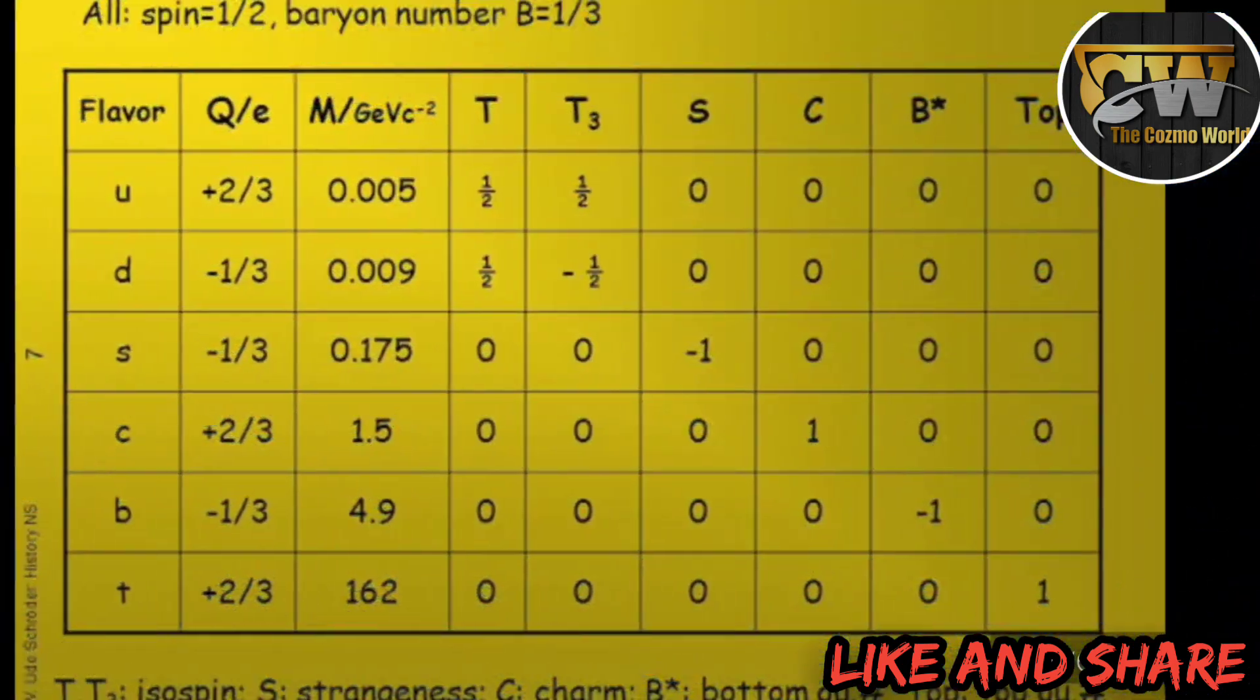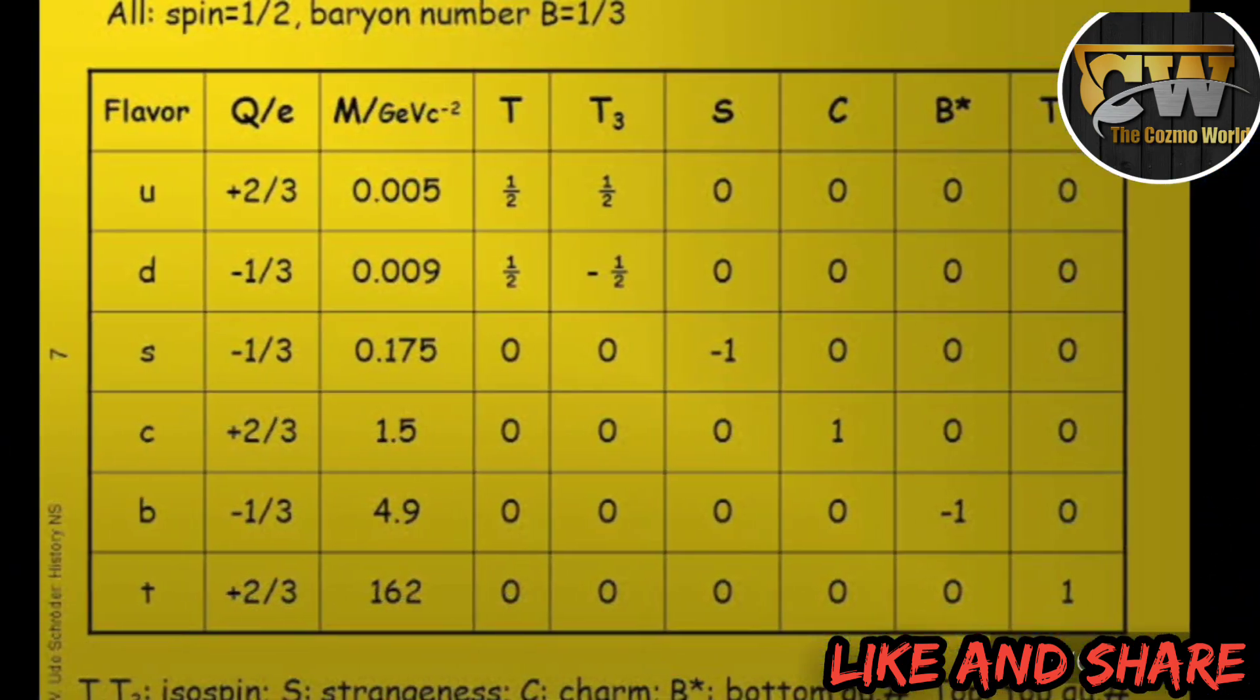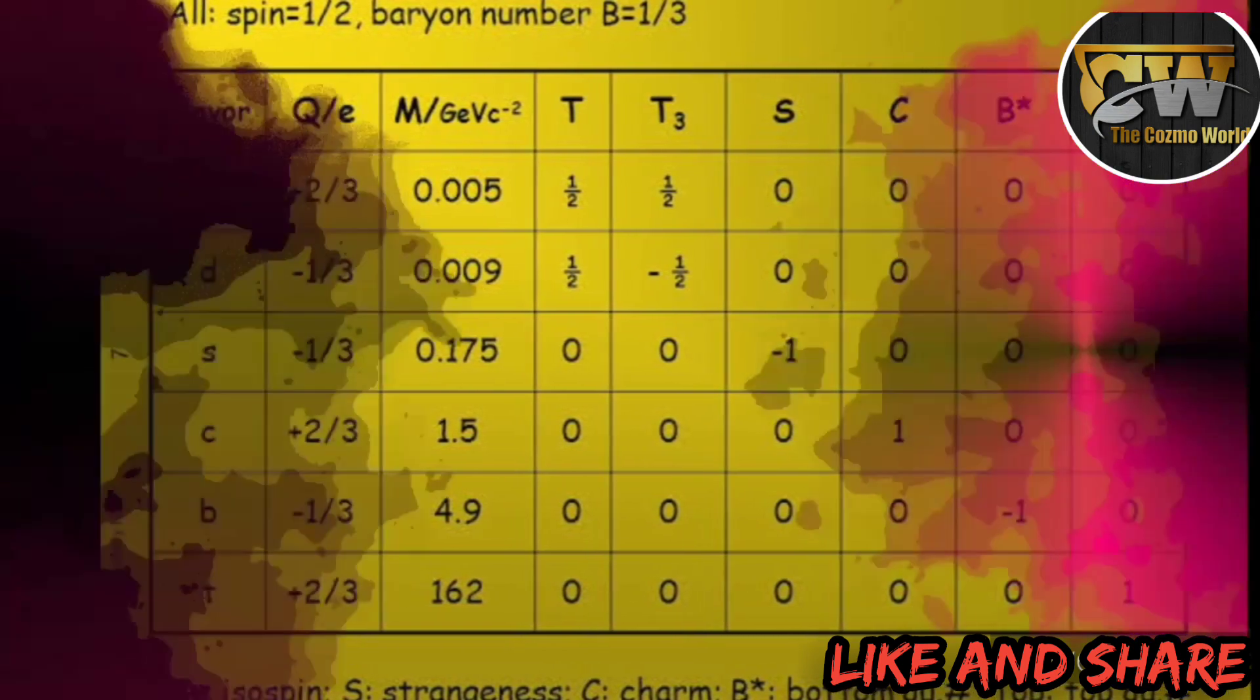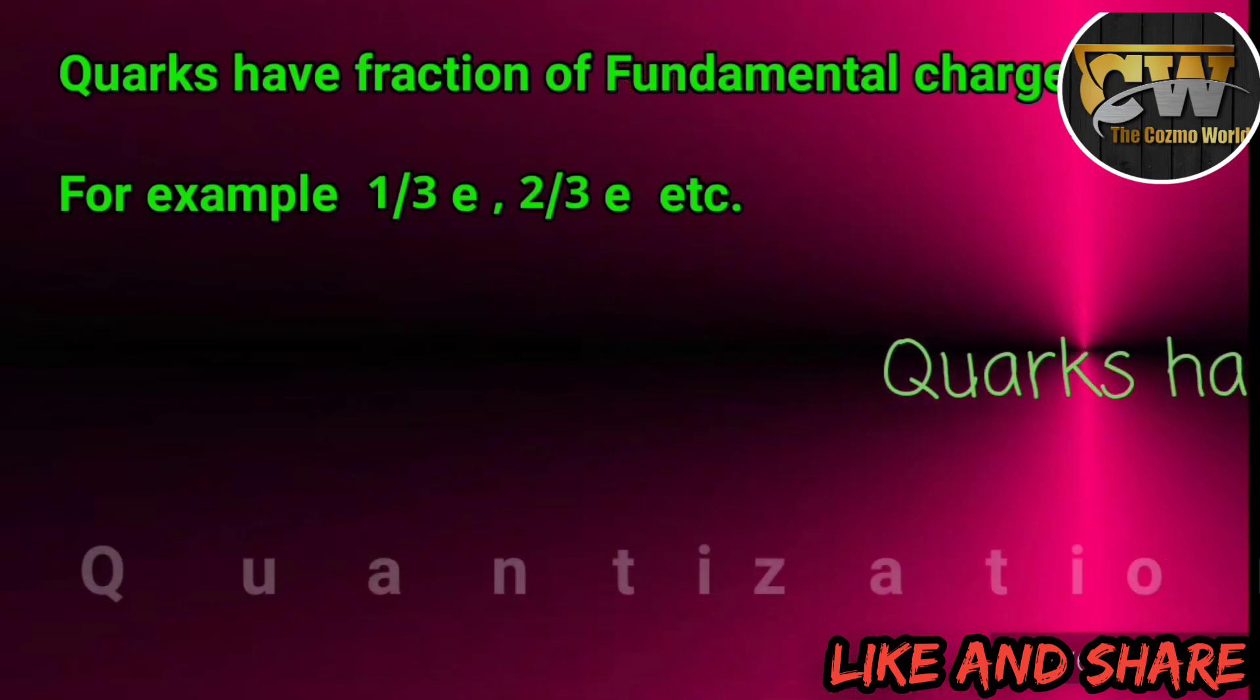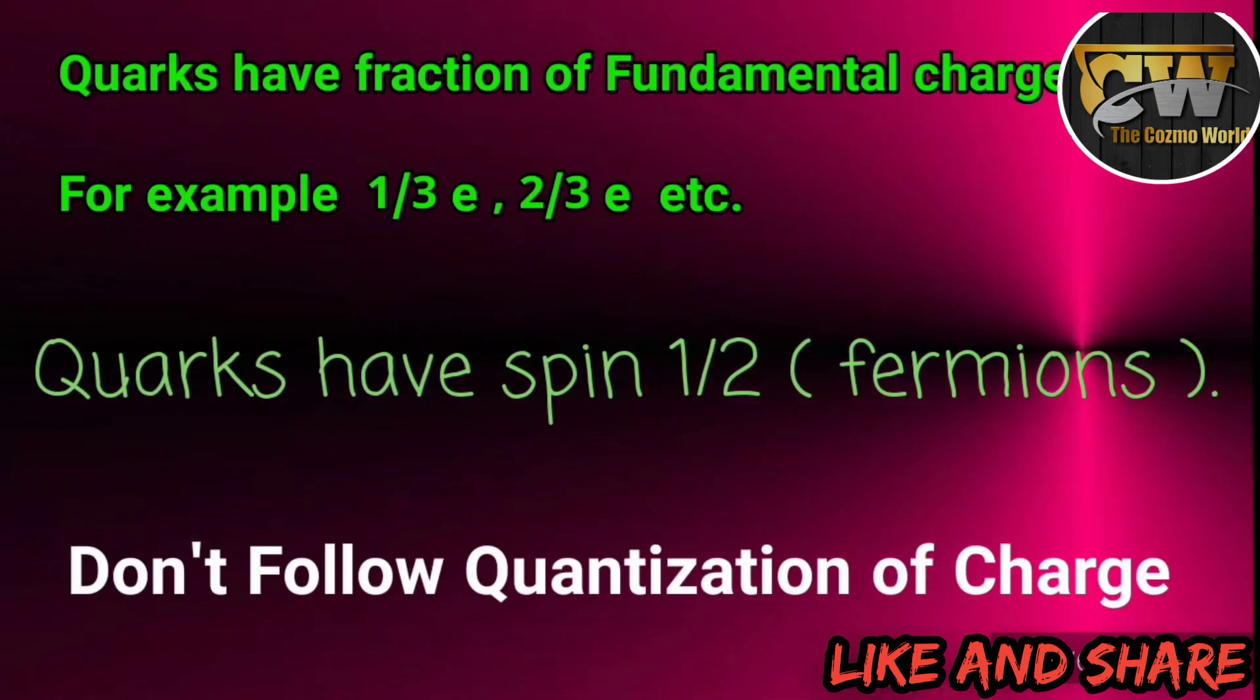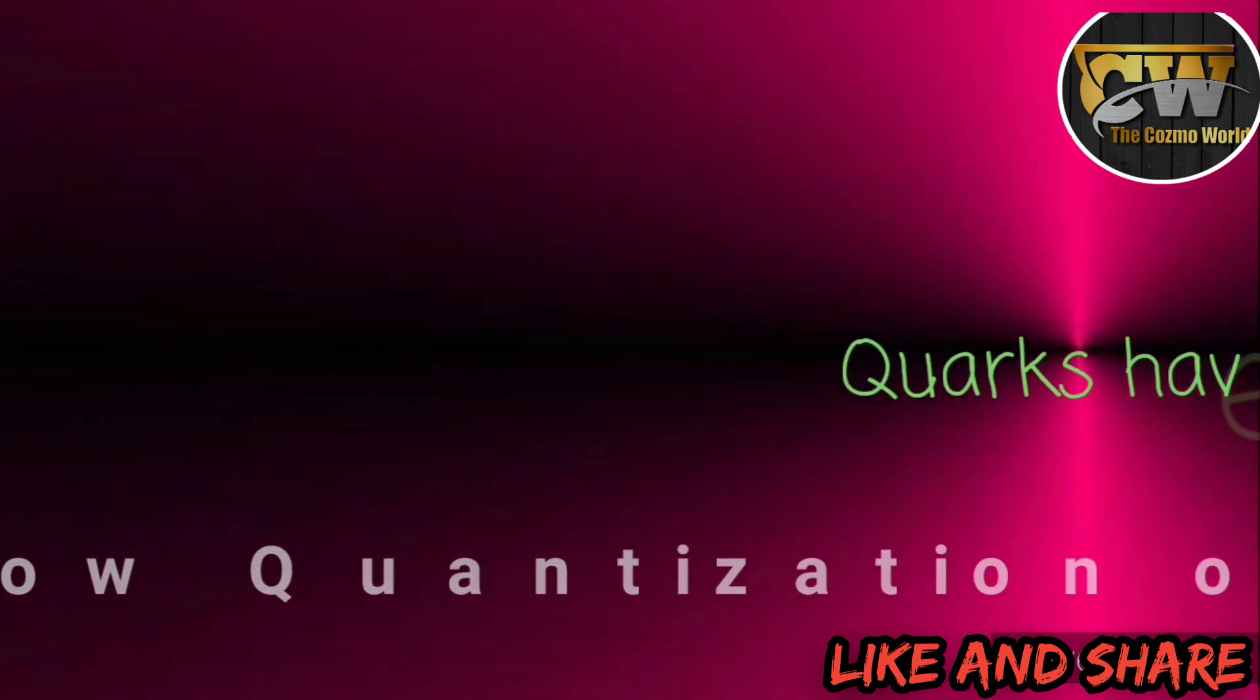Each quark has quantum numbers and specific charge. Quarks do not follow general quantization rules of charge. Quarks have specific charge that is a fraction of the standard charge of proton, E. This made quarks different from all other fundamental particles in the universe.